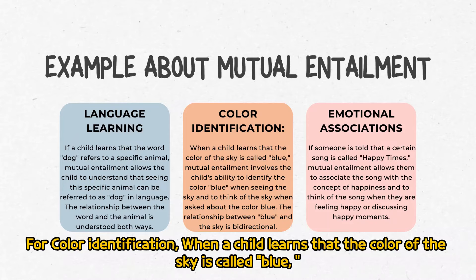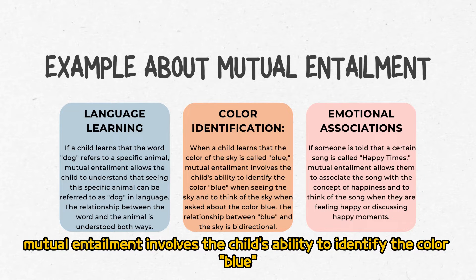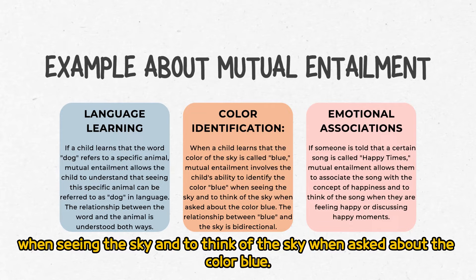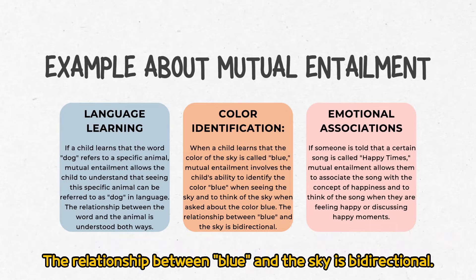For color identification, when a child learns that the color of the sky is called 'blue,' mutual entailment involves the child's ability to identify the color blue when seeing the sky, and to think of the sky when asked about the color blue. The relationship between 'blue' and the sky is bidirectional.